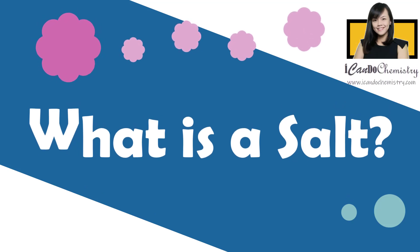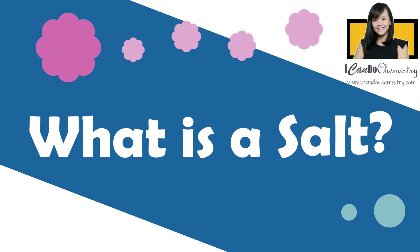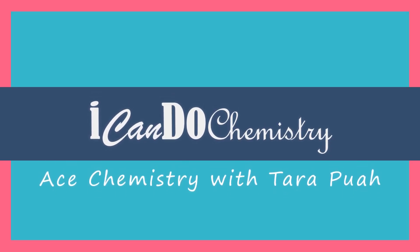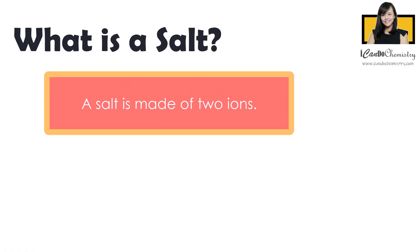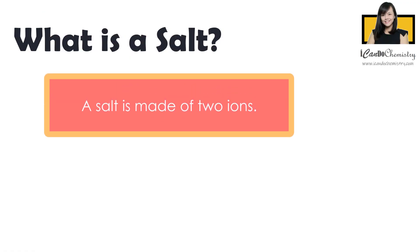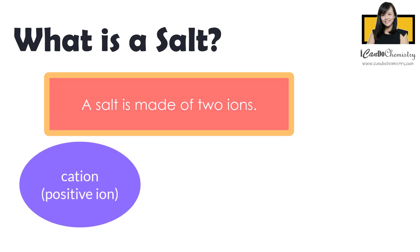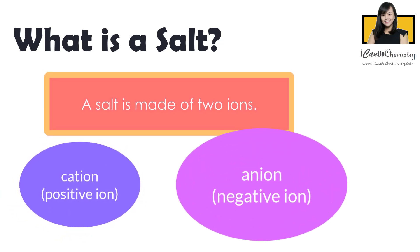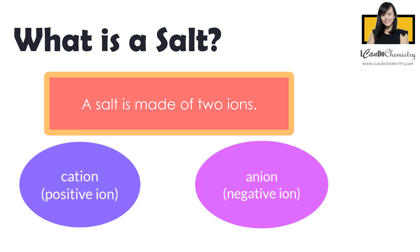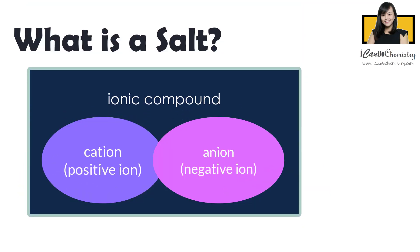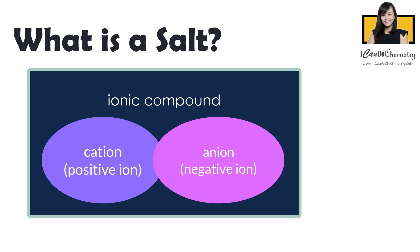What is a salt? In this video, we will answer this common question and work out the formula of different ionic salts. A salt is made of two ions: a positive ion, which we call a cation, and a negative ion, which is called an anion. These two oppositely charged ions come together to form an ionic compound, which we call a salt.